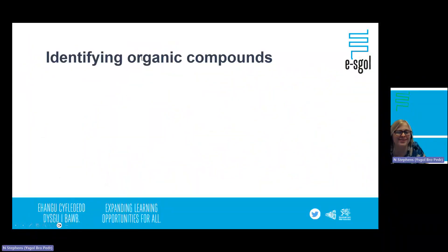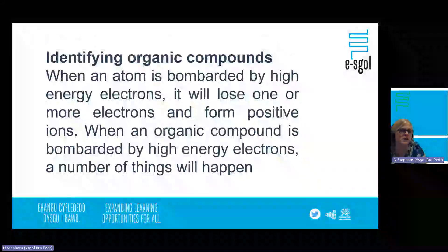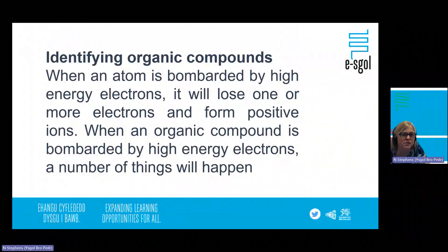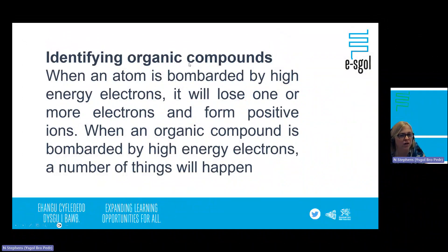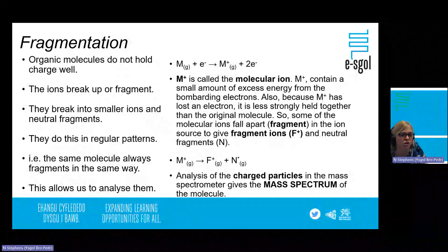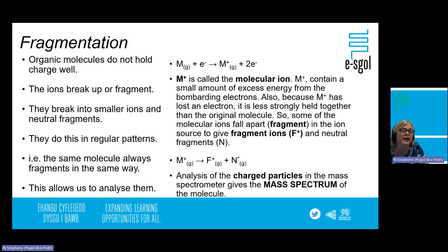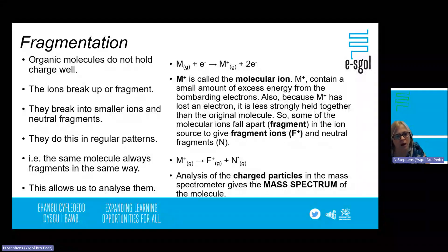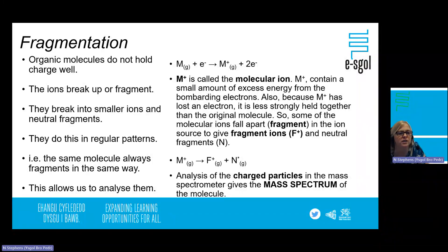Identifying organic compounds is a type of question that often falls into unit two, given the heavy organic content before topic 2.8. When an atom is bombarded by high-energy electrons, it loses one or more electrons and forms positive ions. When an organic compound is bombarded, it gets fragmented — organic molecules do not hold charge very well, and the ions break up into smaller ions and neutral fragments. They do this in regular patterns, which is worth noting.